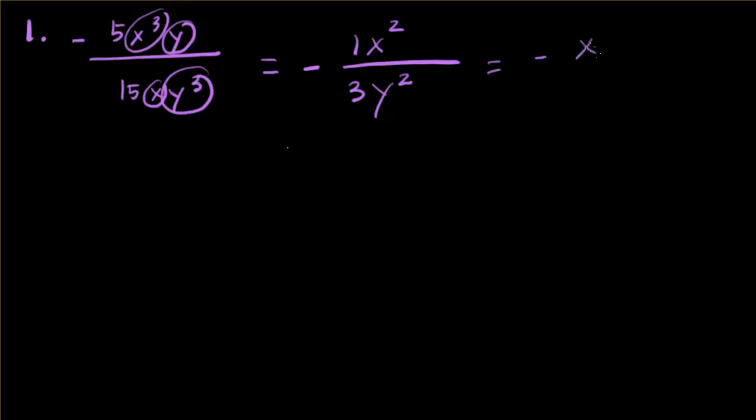So we get negative x squared over three y to the second. Now I need to state restrictions for this. If you look at before simplifying, x cannot be zero and y cannot be zero.